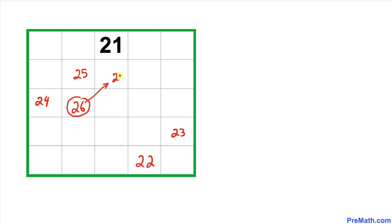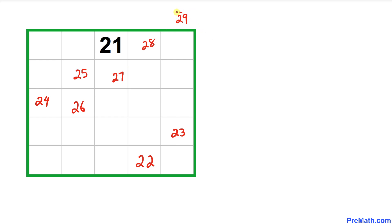From 26 we continue diagonally: 26 gives us 27, 27 moves diagonally to 28, and 28 moves diagonally to 29. Since 29 lands outside the magic square, the wrapping rule applies and 29 shows up on the opposite side.